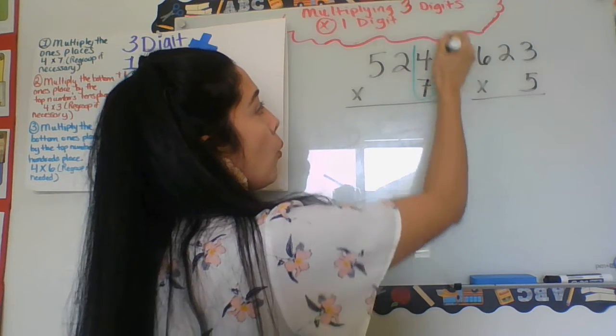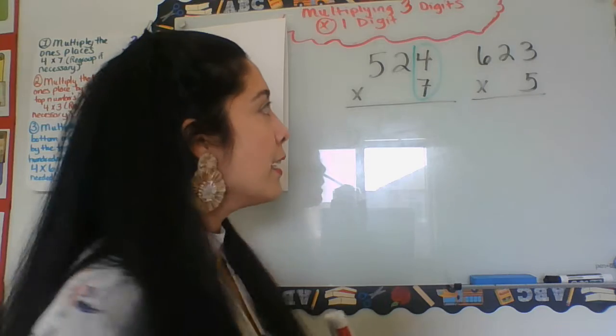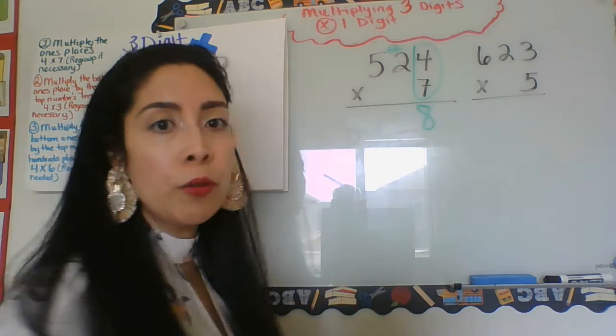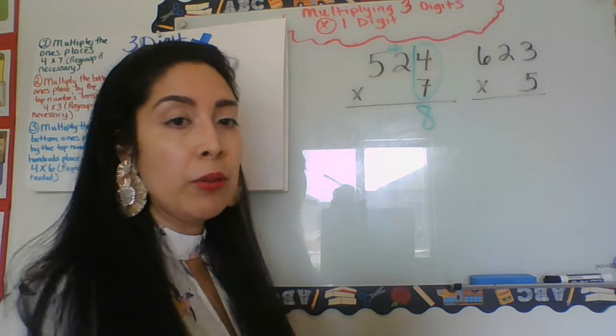Seven times four. What is my answer? That's right, 28. I dropped the eight and I'm going to regroup a two on the next value over. Okay, and then I'm going to go ahead and continue now with my next color.